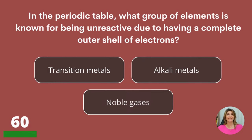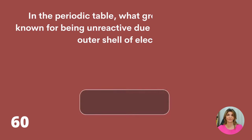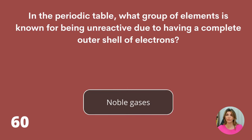In the periodic table, what group of elements is known for being unreactive due to having a complete outer shell of electrons? Transition metals, alkali metals, or noble gases? Noble gases.